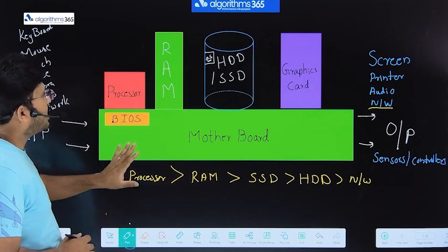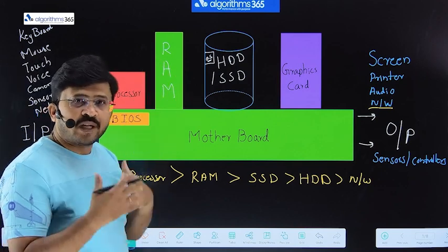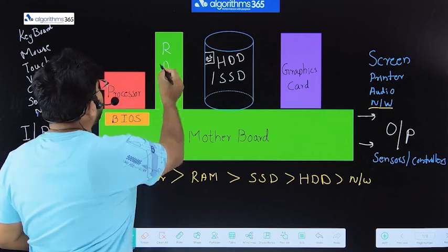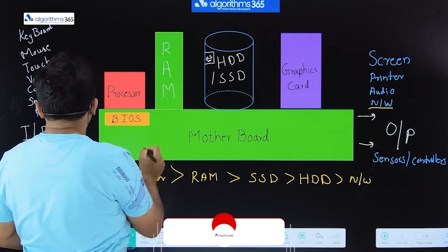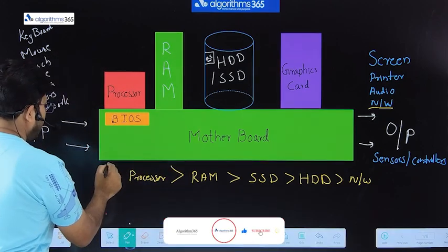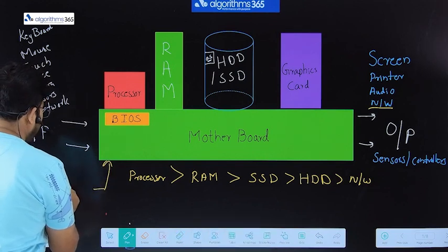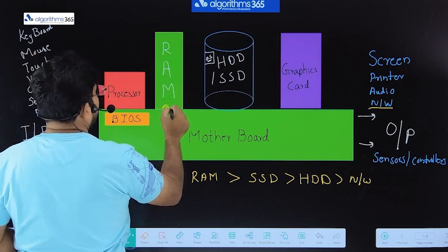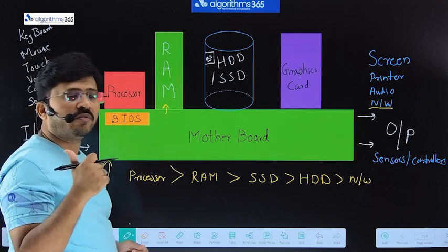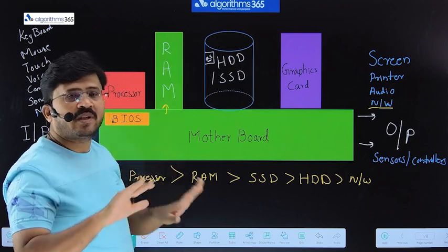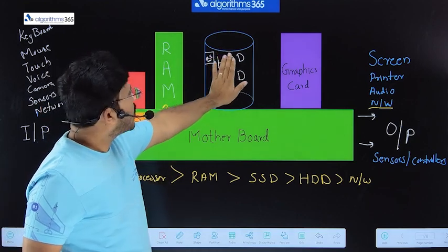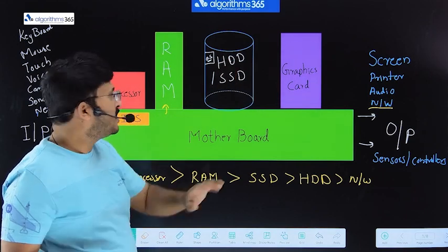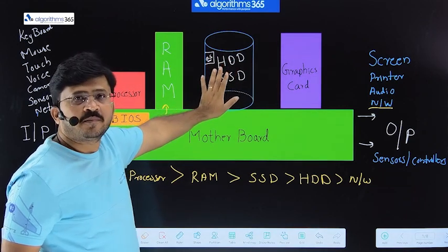At a very high level, as you might have already learned, the RAM is a temporary memory. The memory here is only till you have the power supply. Once we have a power supply, that is when the RAM would work. RAM requires continuous power supply for it to work. The moment you switch it off, whatever is loaded in the RAM gets lost. Whereas, whatever you store in your HDD or SSD, it is permanent. If you store a file there, it remembers it permanently.